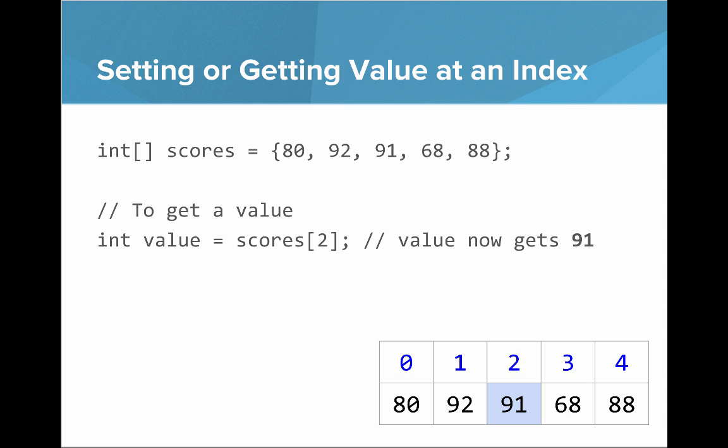So if we want to set or get a value at an index, to get a value, we do that like we did before. We say int value equals scores at the index, which gives value now 91. And to set a value, we would say scores of the index equals the new value. So we're saying scores at index three gets the value 72.